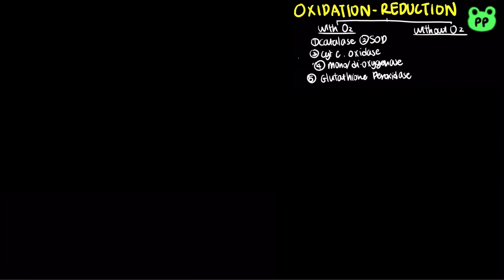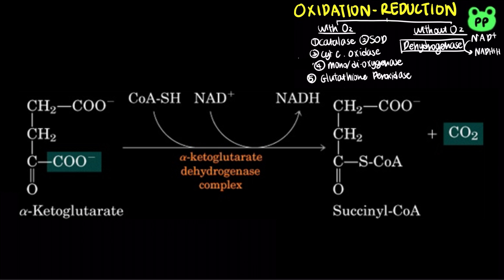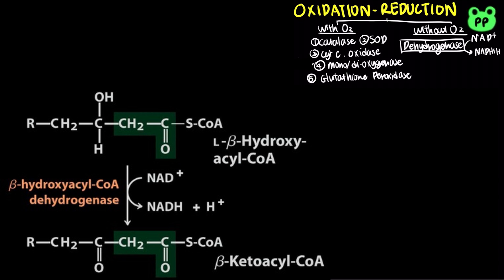Oxidation-reduction reactions that don't involve oxygen include dehydrogenases, which oxidize a compound by reducing NAD+ into NADH. It is the most common oxidation reaction in our metabolic pathways, including glyceraldehyde-3-phosphate dehydrogenase in glycolysis and alpha-ketoglutarate dehydrogenase in the citric acid cycle, as well as beta-hydroxyacyl-CoA dehydrogenase in beta-oxidation of fatty acids.